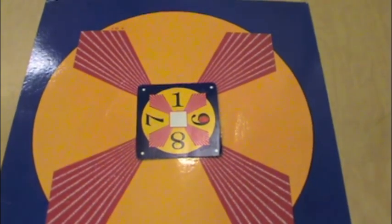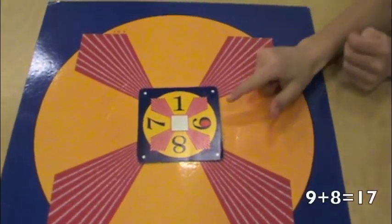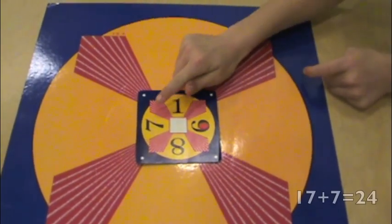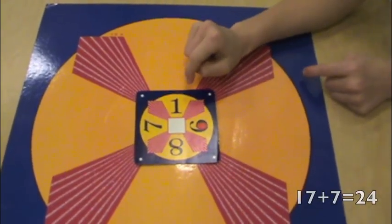Here is one way how to solve this card. 9 plus 8 is 17. 17 plus 7 is 24. 24 times 1 is 24.